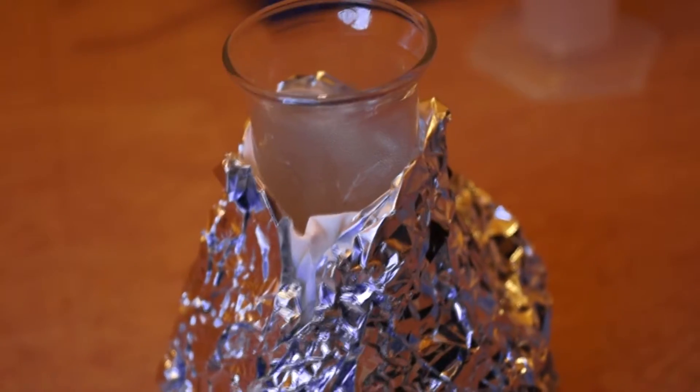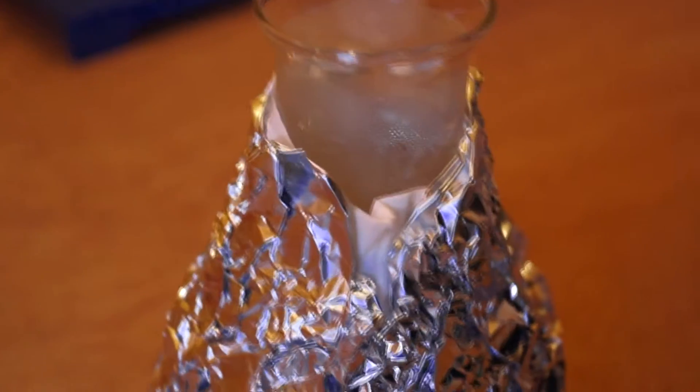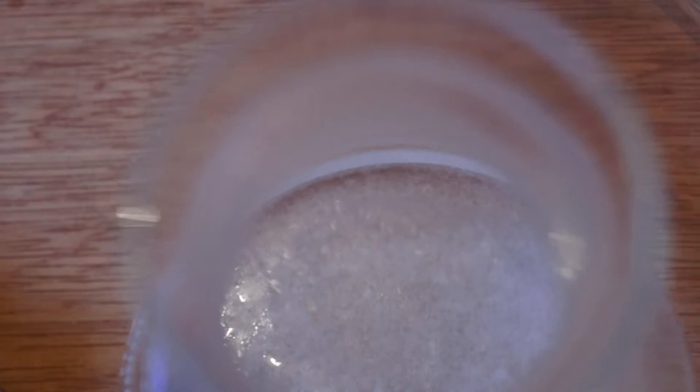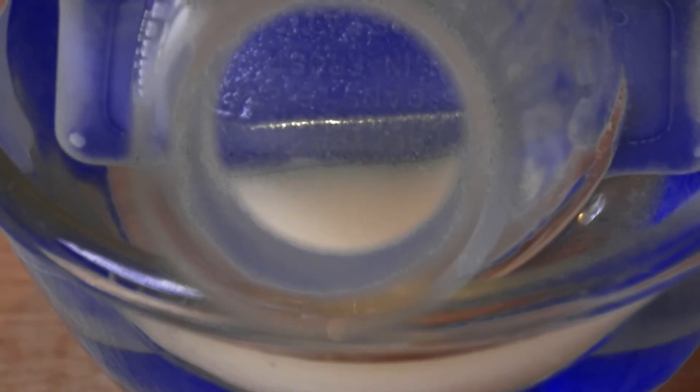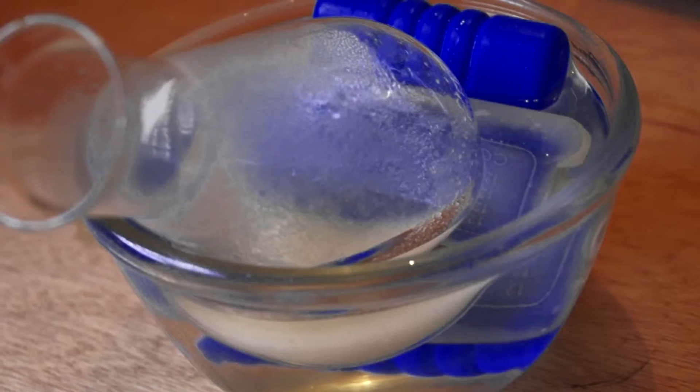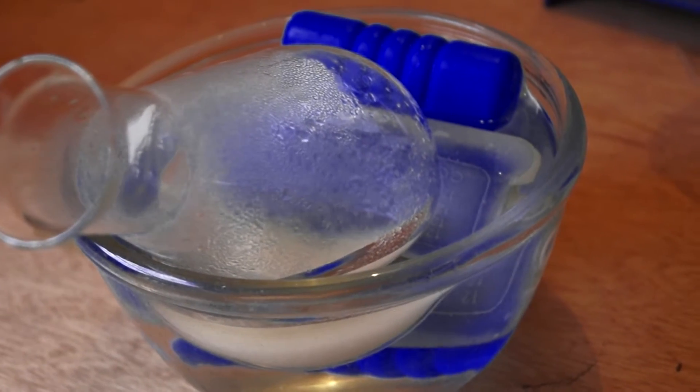Allow the solution to cool slowly in order for crystallization to occur. To do this you can use some kind of insulation like tissue paper and tin foil. Once the solution reaches room temperature you can put the conical flask into an ice bath to further aid cooling.